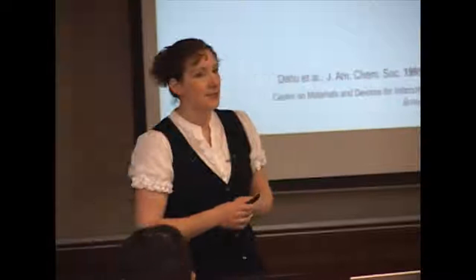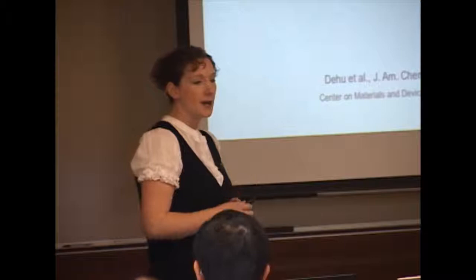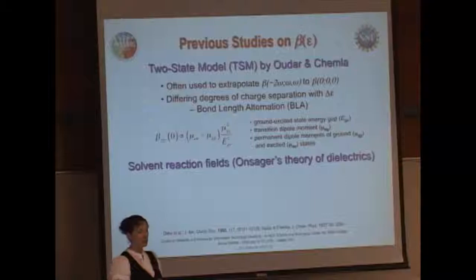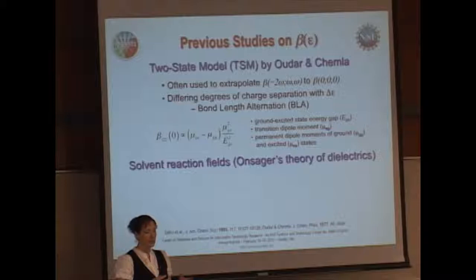We should first consider previous models and studies that have been done on this. The two-state model is one of the most popular methods for extrapolating your measured values back to zero frequency. And also from that, you can consider, due to the different degrees of charge separation experienced in a molecule, as you change solvent polarity gives rise to a difference in terms of the bond length alternation. The two-state model is shown here.